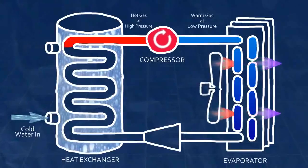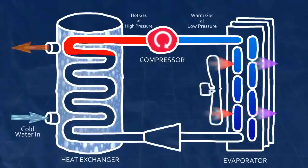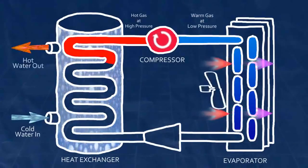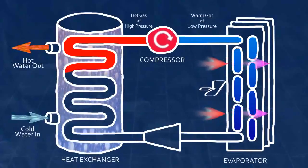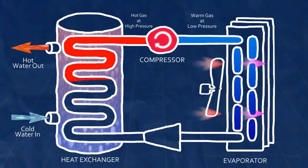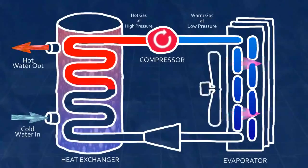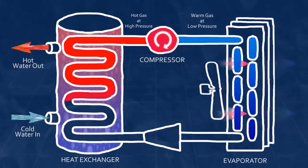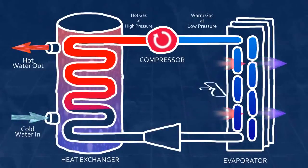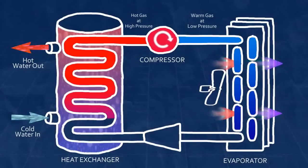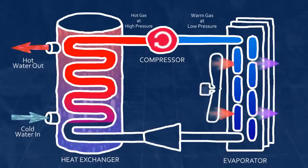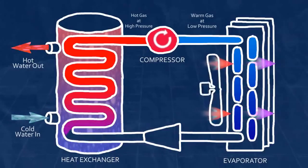The condenser is in contact with the water and the hot gas now gives up its heat to the colder water. As heat leaves the gas refrigerant, it cools off below its condensation point and changes from a gaseous state to a high-pressure liquid state. The change from gas to liquid facilitates the large transfer of heat energy to the water.